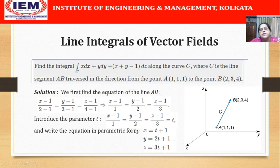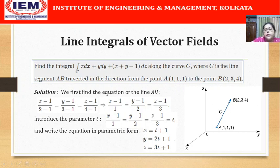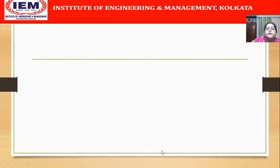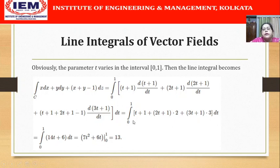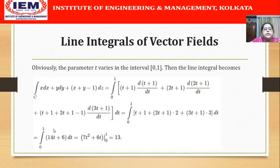Now substituting these expressions into the integral and evaluating, with x = t+1, y = 2t+1, z = 3t+1, the integrand simplifies to (4t + 6) dt. With limits from 0 to 1, the final answer is 13.